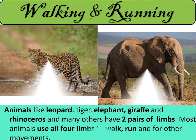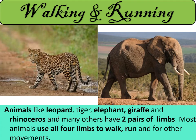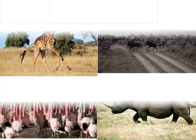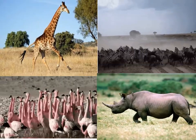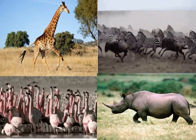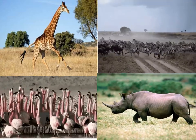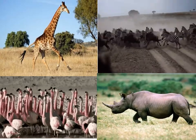Children, let's learn about the movement of animals. Animals like leopard, tiger, elephant, giraffe, rhinoceros, and many others have two pairs of limbs. Most animals use all four limbs to walk, run, and for other movements. Other animals like rhinoceros, zebra, and giraffe, as well as some birds like flamingos, walk on their two limbs.